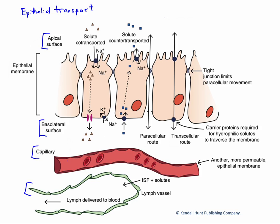If we're trying to move particular substances across this membrane, there are really two main pathways that substance can take. It can go between the cells, known as the paracellular route, or it can go across the cells — the transcellular route.